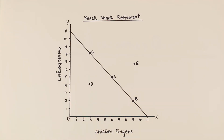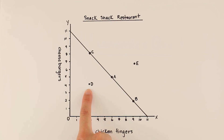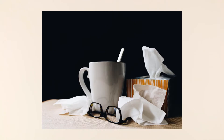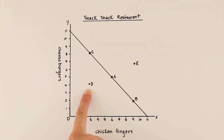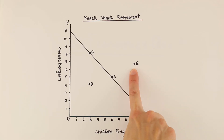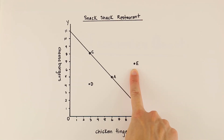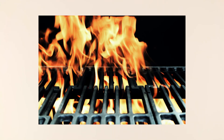Remember, a production possibilities curve shows how productive you can be with your scarce resources. At point D, where you see a shift inward, it means the restaurant is not using their resources to their full potential — perhaps a cook is out sick. Similarly, if you see a shift outward like point E, it means the restaurant has increased their productivity — perhaps they bought an additional grill.